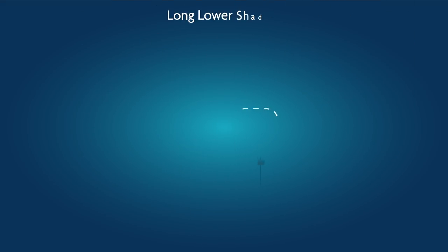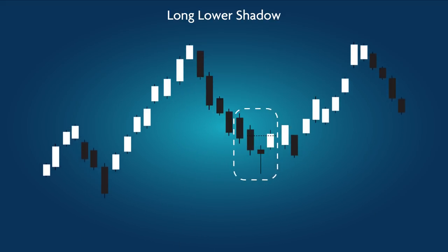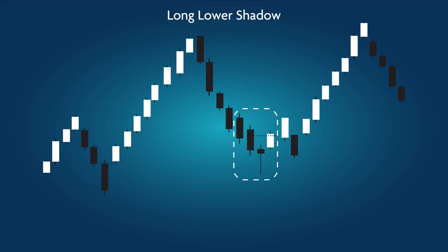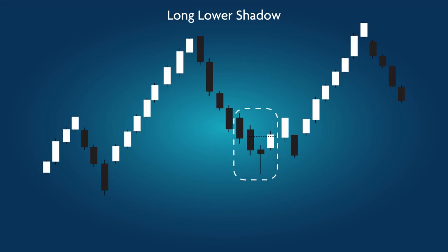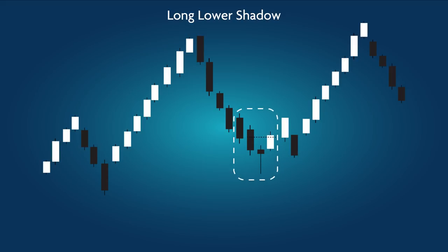Long Lower Shadow: a bullish pattern. At its base is a candle with a long bottoming tail, followed by a clear candle rising to at least halfway above the body of the black candle preceding the bottoming tail candle.